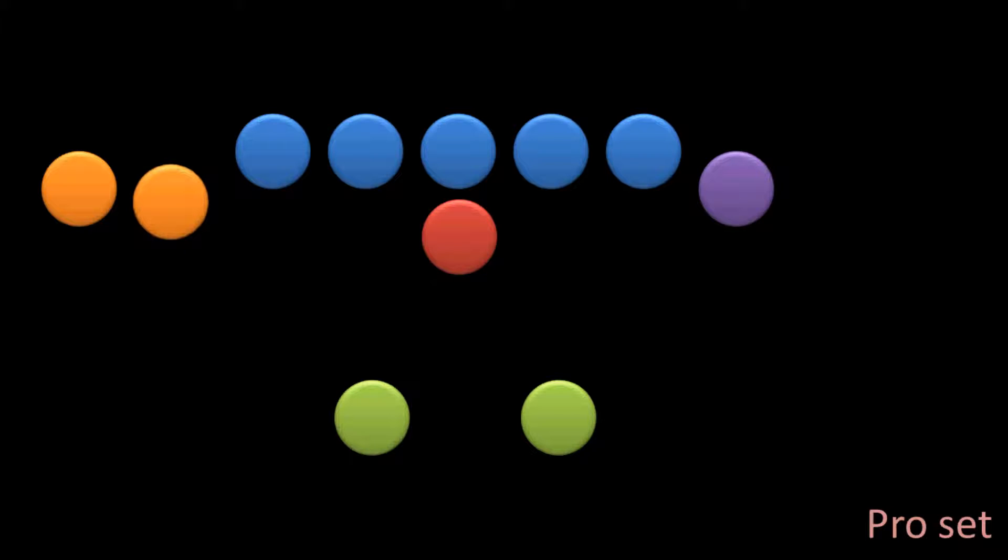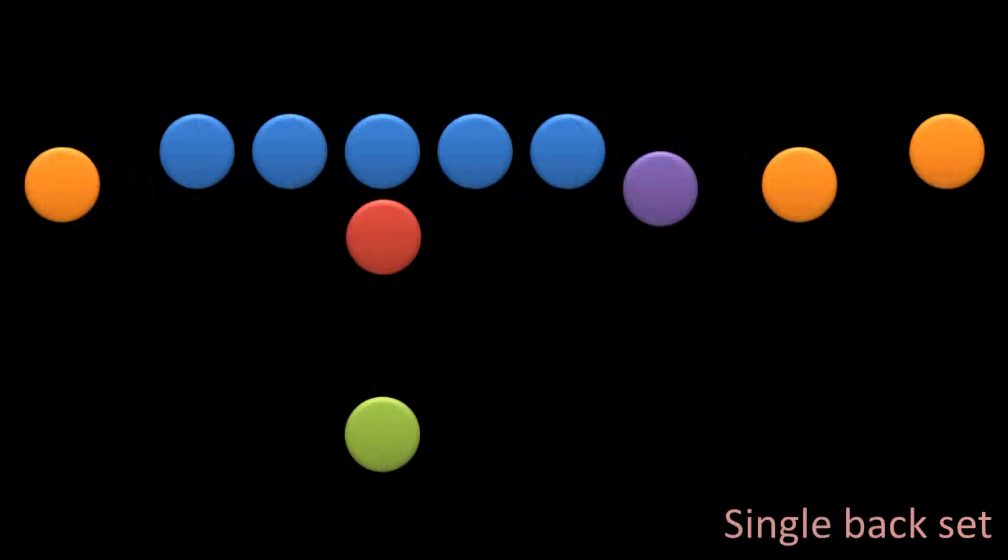The next formation is called the single back set, which just means that there is one running back. And so again, there can be a lot of variations that are used. Maybe a team has two tight ends or two wide receivers, or more commonly one tight end and three wide receivers.